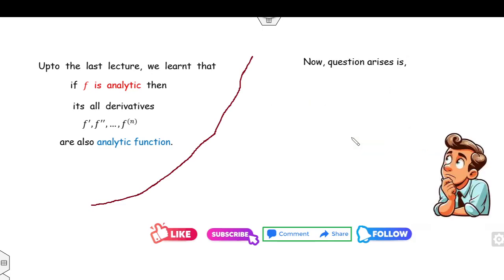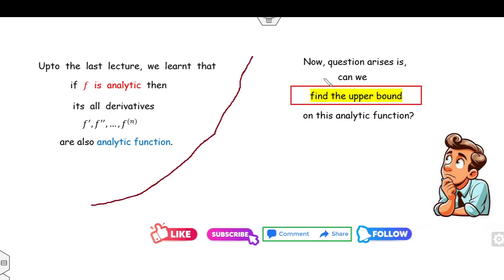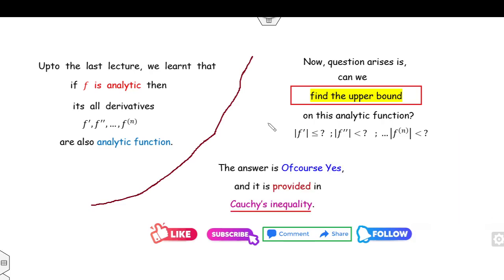Now the question arises: as we know, if a function is analytic its derivatives are also analytic. Can you find the upper bound on these analytic functions — the upper bound of the first derivative, the second derivative, and so on? The answer is yes, and the result that provides this is the Cauchy inequality.